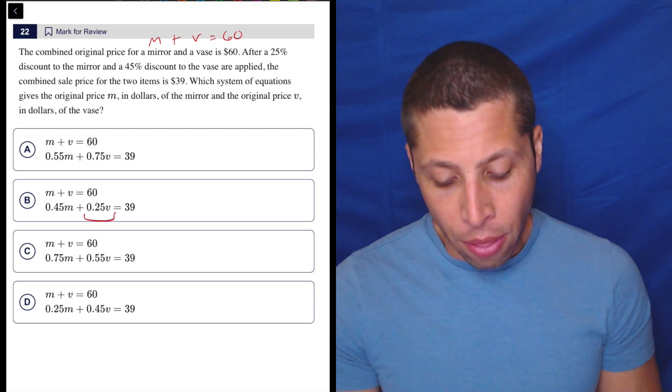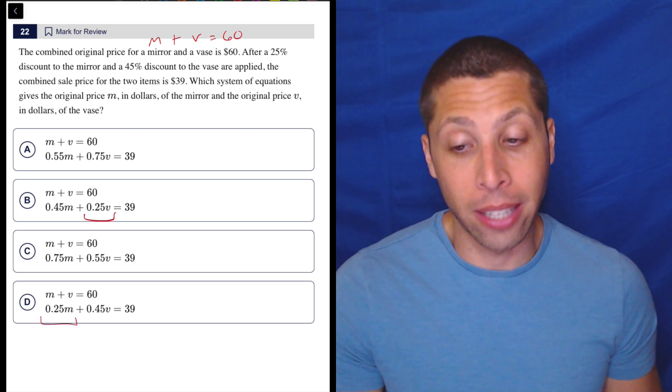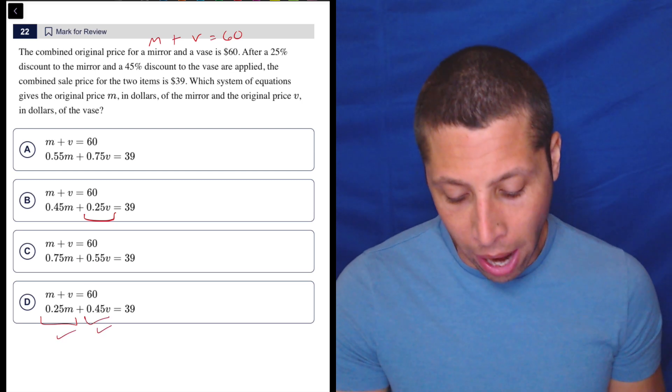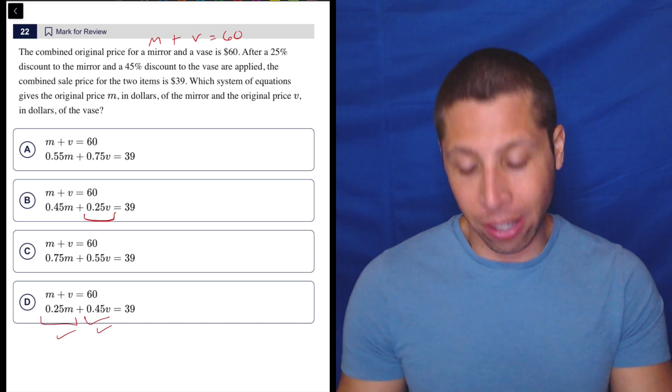So what we could be thinking about is, let's be careful. This choice B is applying the 25 to the vase. This is applying the 25 to the mirror and then 45 to the vase here. So this is the one that's right. But actually, no, that is what we're doing there in choice D.